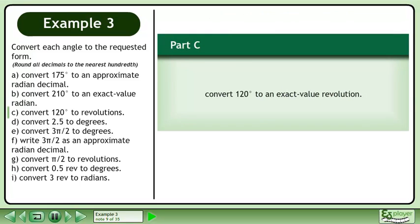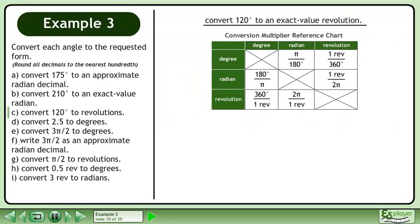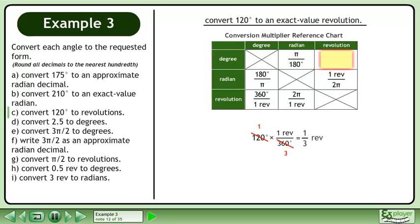In Part C, convert 120 degrees to an exact value revolution. We'll use the Conversion Multiplier Reference Chart to assist us. We are converting from degrees to revolutions, so multiply 120 degrees by 1 revolution over 360 degrees. Reduce the fraction to get 1 over 3 revolutions.